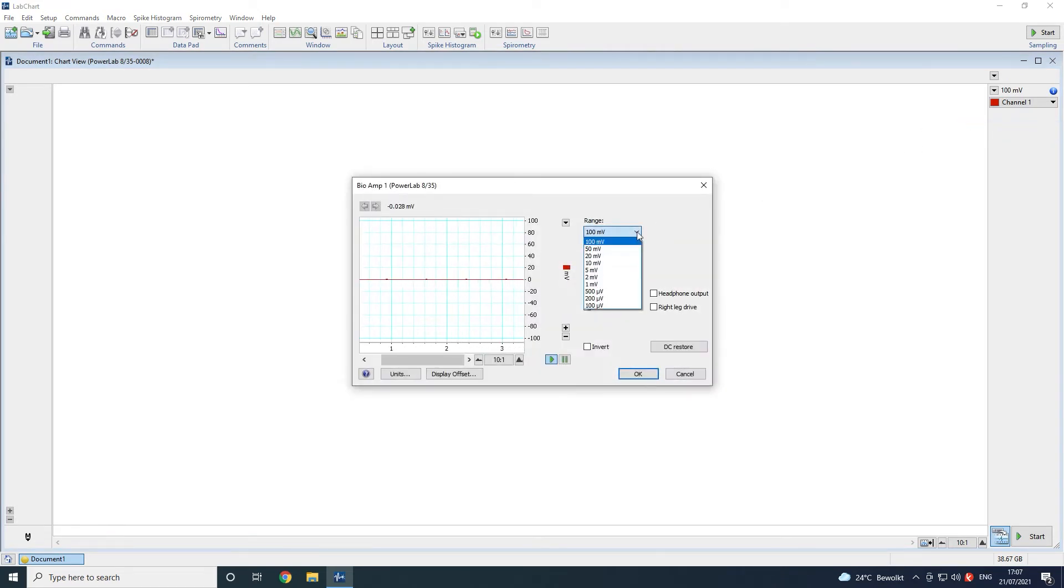In this dialog you can set up the range of the input signal, the required low pass or high pass filters, the mains filter if mains noise is present, and invert the signal if needed.